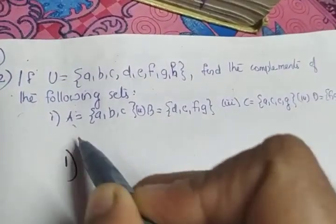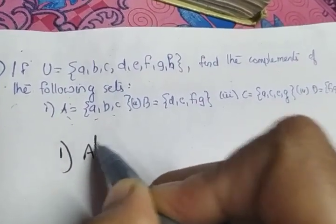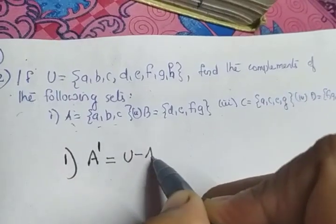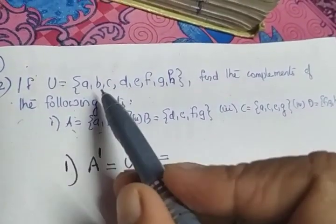So the first one is A. A equals {a, b, c}. We have to find the complement, which means A dash. How will we find the complement? U minus A. So what we have to do is subtract, meaning strike off all these elements from U.